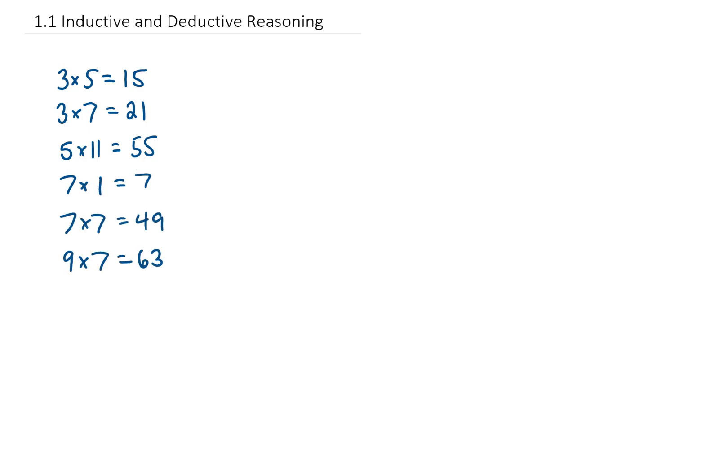You've tried out several examples, and it always seems to be the case. So based on all of these observations, you come up with a hypothesis, also called a conjecture. And your particular hypothesis is that when you multiply two odd numbers together, you get an odd number.